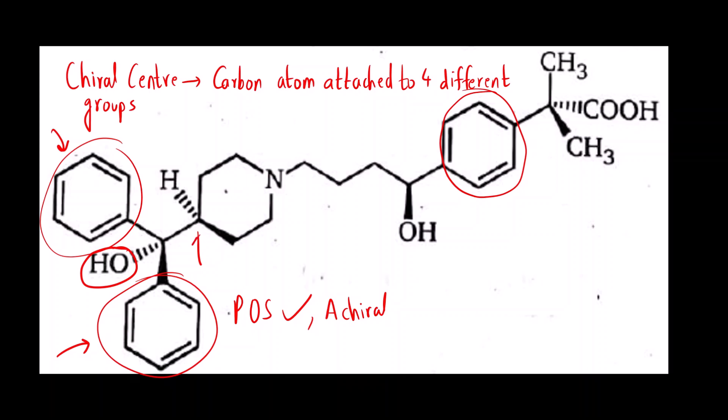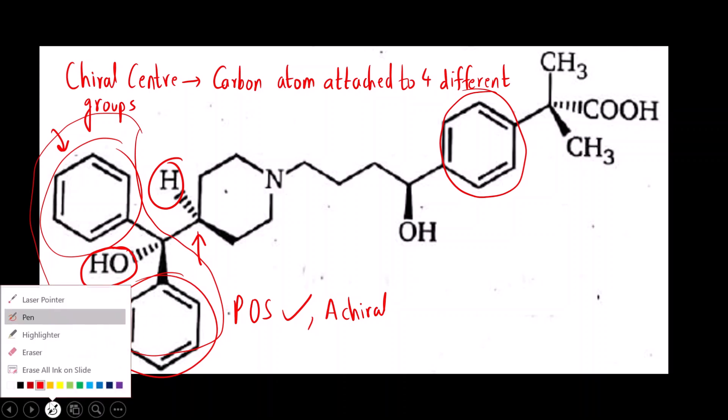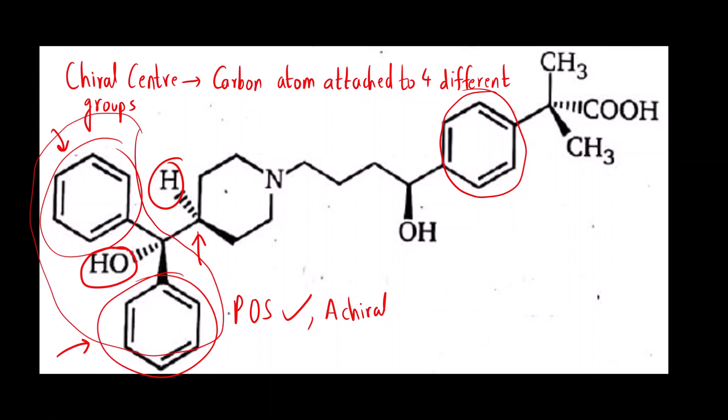Let us see the another carbon. This carbon also, we had marked that this is chiral. Why? Let us see now. This is hydrogen is present. Here this entire big group is present. Two groups are different. Now, I told you what you have to do is you have to check the adjacent carbon.